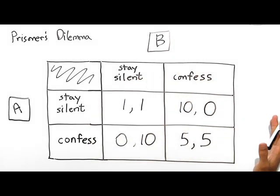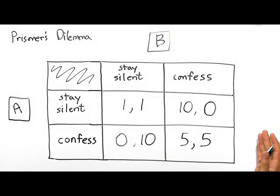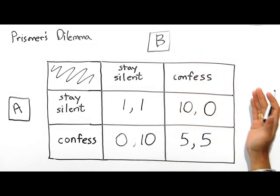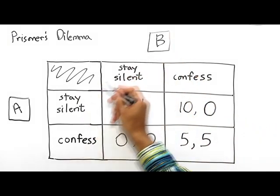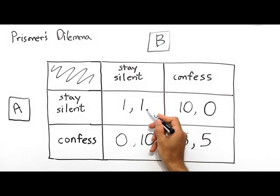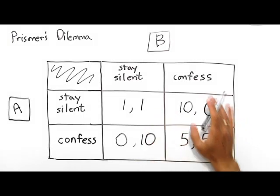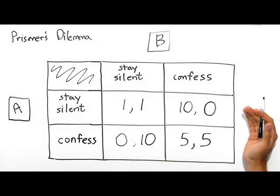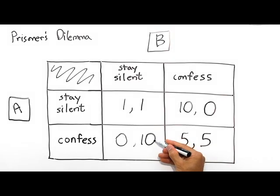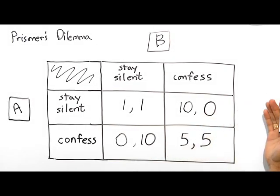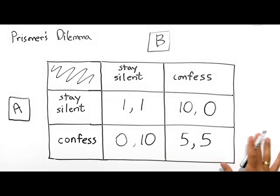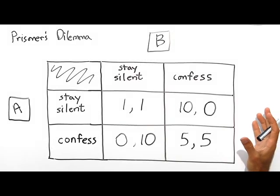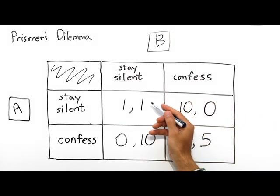But remember, if both prisoners stay silent, the police don't have enough evidence to prosecute them for armed robbery. They can only prosecute for weapons possession charges, and those charges would result in a penalty of one year for each prisoner. This creates a very interesting situation for both Prisoner A and Prisoner B, who cannot communicate. It essentially boils down to trust. Does Prisoner A trust Prisoner B enough to stay silent? Does Prisoner B trust Prisoner A enough to stay silent? Because if they both stay silent, they will only receive a one-year penalty each. The ideal situation for both prisoners, as a partnership, is to stay silent — they'll both incur only a one-year prison sentence.